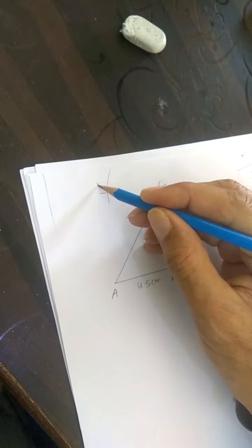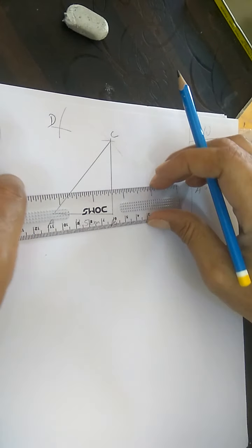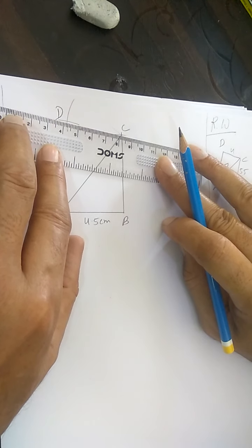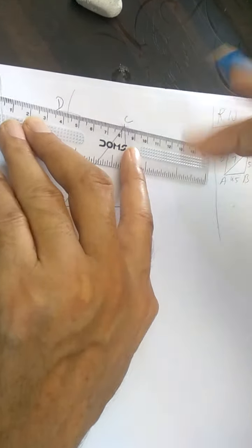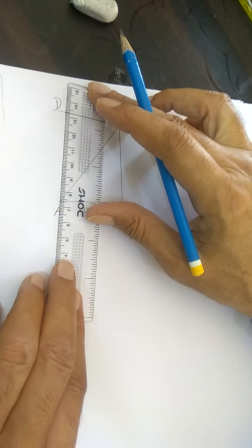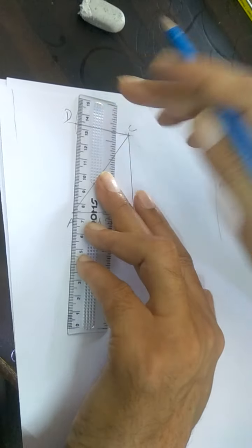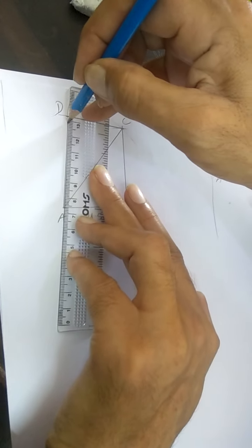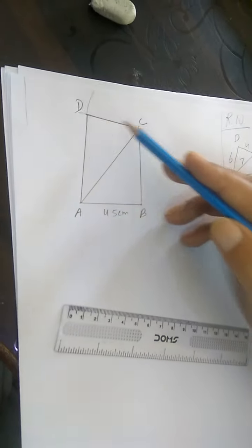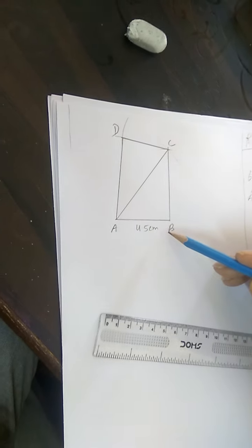Join CD, and AD. And thus, ABCD is the required quadrilateral. Thanks for joining.